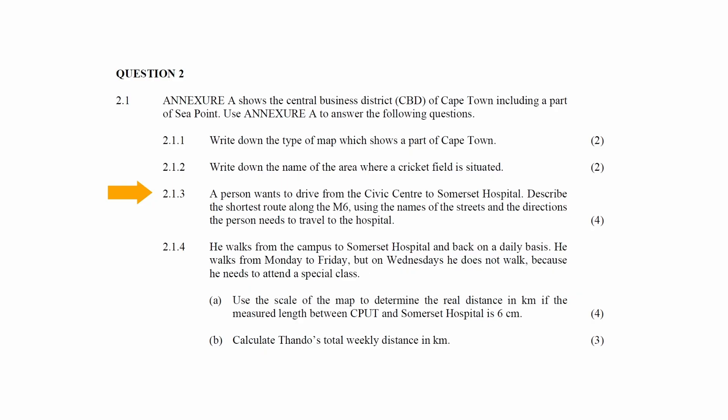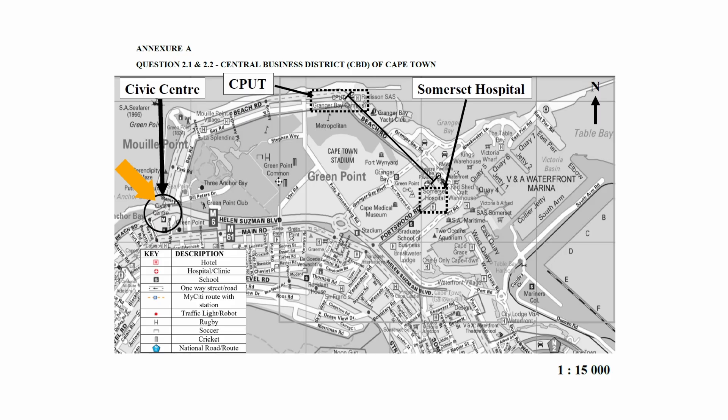In Question 2.1.3 it is stated that a person wants to drive from the Civic Center to Somerset Hospital. You have to describe the shortest route along the map using the names of the streets and the direction the person needs to travel. Using the map and the direction of north, the person will follow these directions.